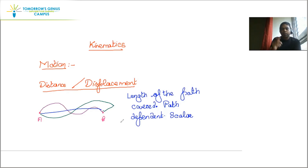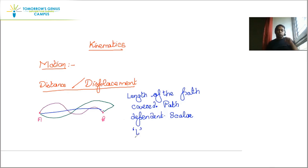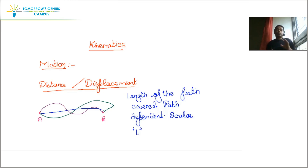Irrespective of whichever system of units you take — CGS, SI, or any other — distance is ultimately equal to the length of the path. We represent length by the symbol L, so dimensionally we represent it by capital L. In physics, you can only add or subtract quantities which have the same dimensions; you cannot add or subtract quantities of different dimensions.